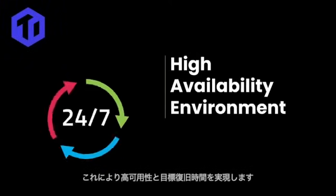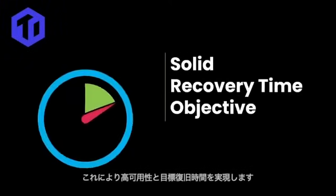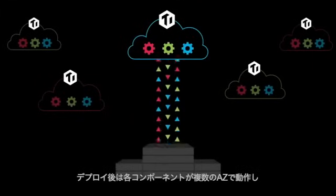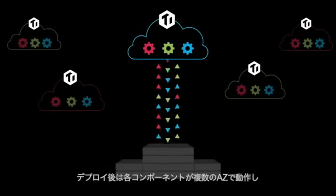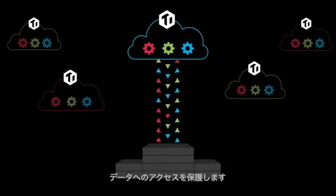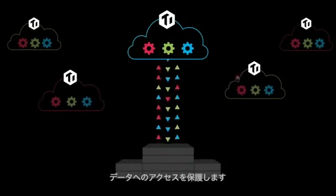Once deployed, each component is set to run in multiple availability zones to protect your data access, with multiple replicas of the data stored in different availability zones.